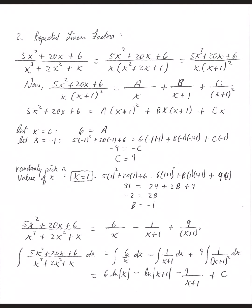Maybe you're dealing with a rational function that has repeated linear factors. We're going to start like the first example and factor the denominator as completely as possible. All three terms have an x in common, so factor out an x, leaving x squared plus 2x plus 1. This quadratic can also be factored as x plus 1 squared, since x plus 1 times x plus 1 foils out to x squared plus 2x plus 1.